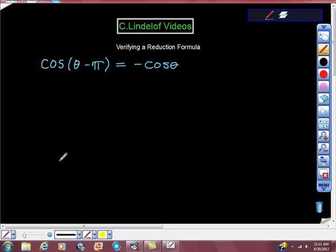All right, verifying the reduction formula. We have cosine of theta minus pi, and we're saying that it's equal to negative cosine theta.